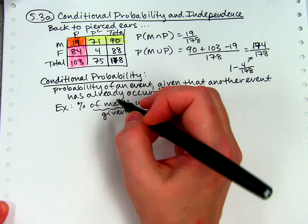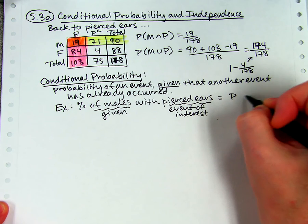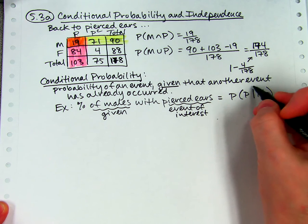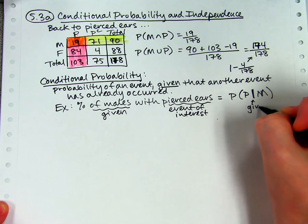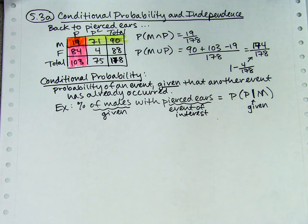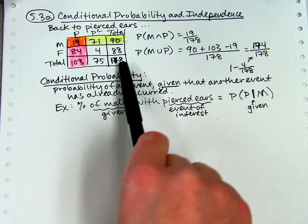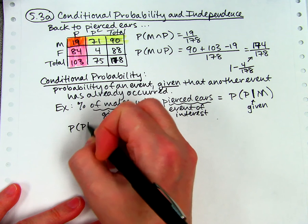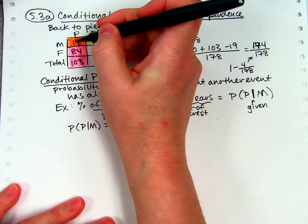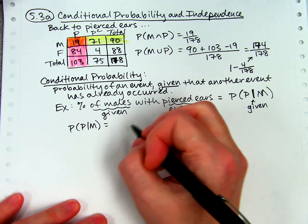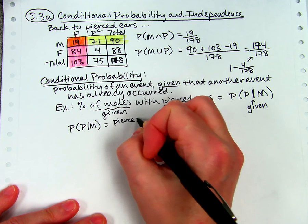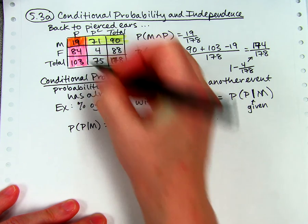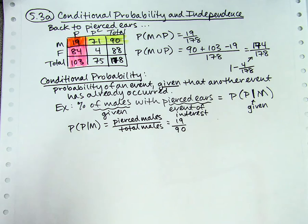The 'of males' is the given piece. The pierced ears is the event of interest. In other words, we want to find the probability of pierced ears given that they're male, not in the whole population, but just in the population of males. There's a symbol for that: the probability of pierced given male. It's a straight up and down line. It looks like a divided by, but it's not slanted. It's straight up and down, and that symbol means given. Like we did in Chapter 1, we will be dividing by one of these marginal totals instead of the total total, which is 178.